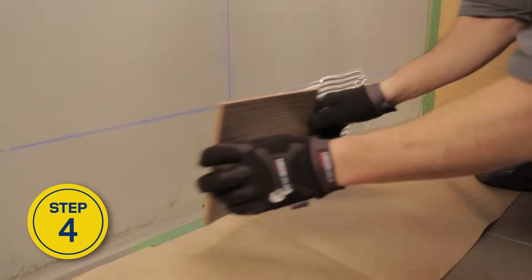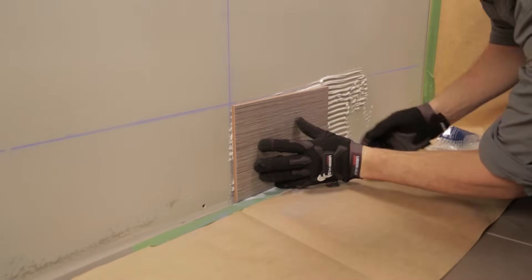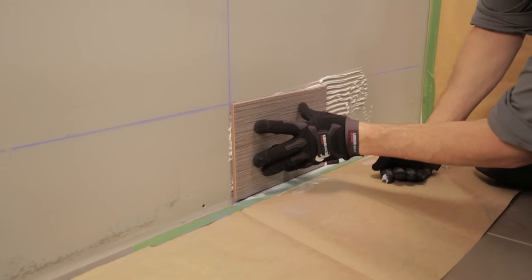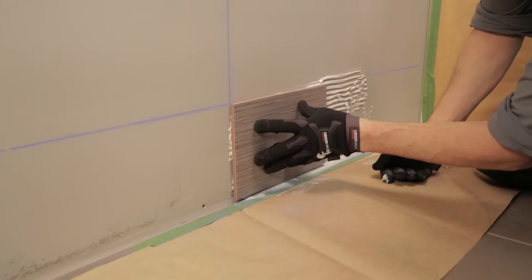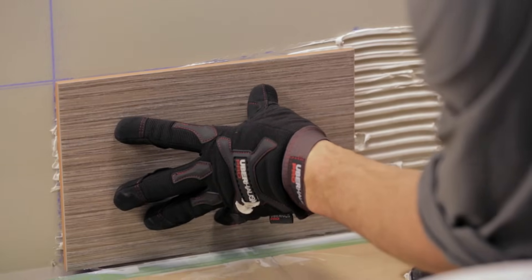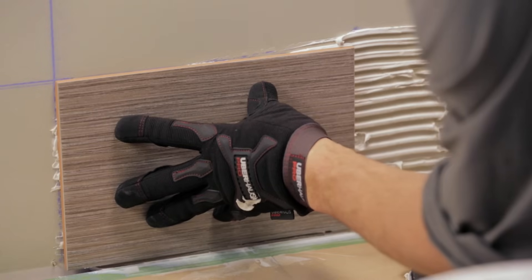Using the reference lines as a guide, install the first tile near the center of the wall, twisting it slightly so it adheres well. Check that the tile is level and adjust as needed.